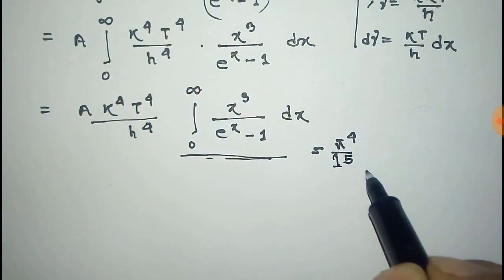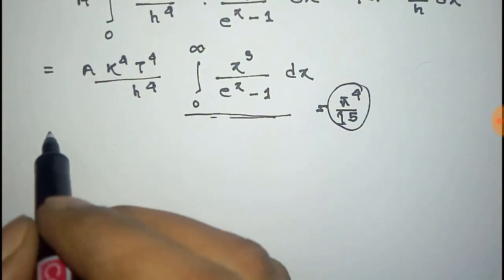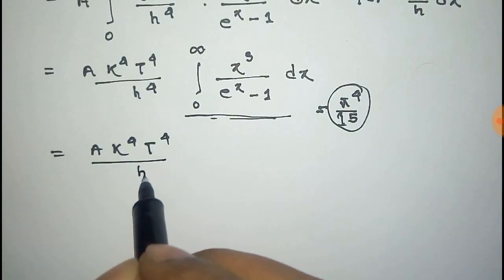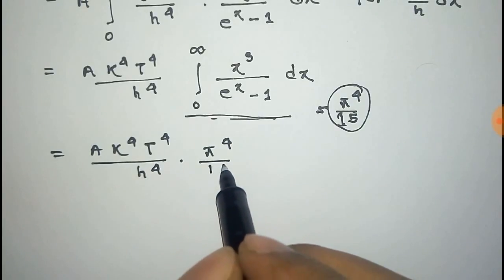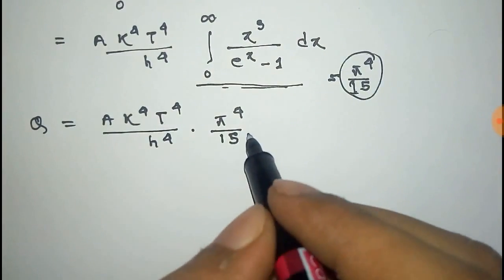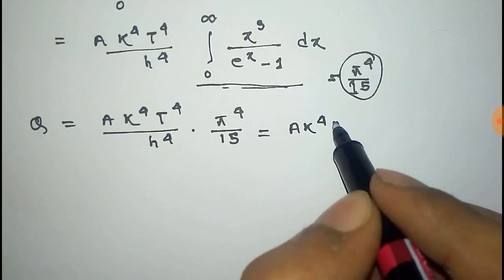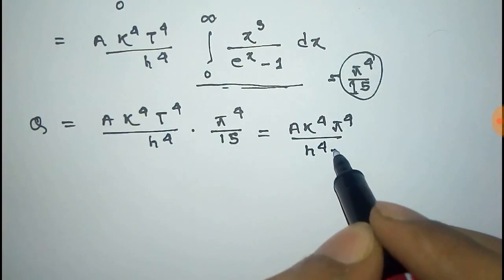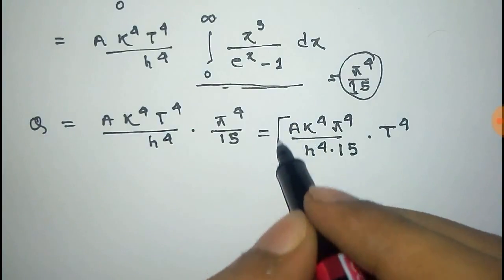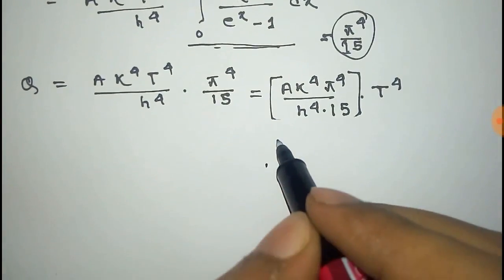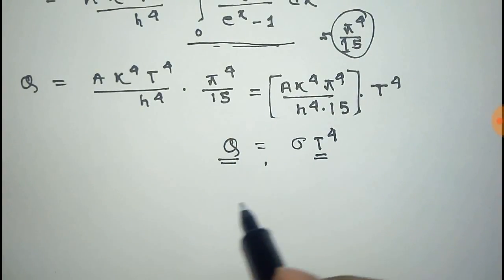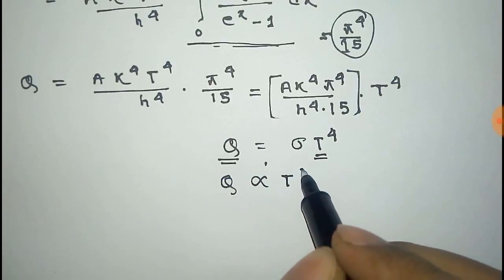The value of this definite integral is π⁴/15. After putting this value, we get Q = A·(k⁴T⁴/h⁴)·(π⁴/15). Grouping all constants together as σ, this gives Q = σT⁴, or Q proportional to T⁴. This is the well-known Stefan's Law.